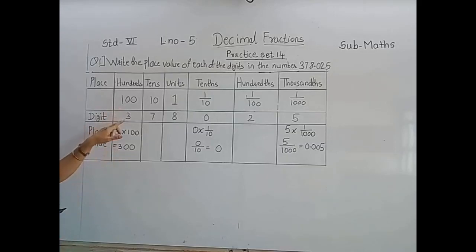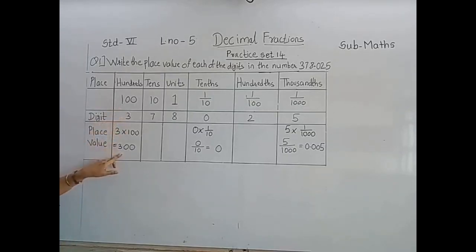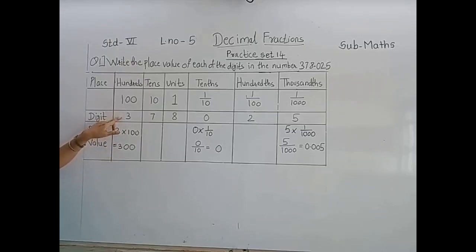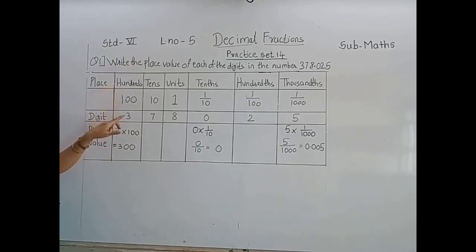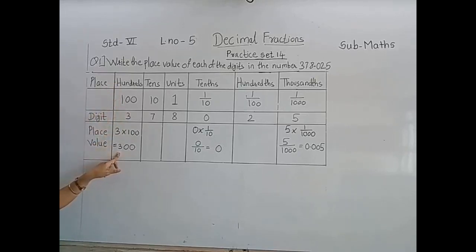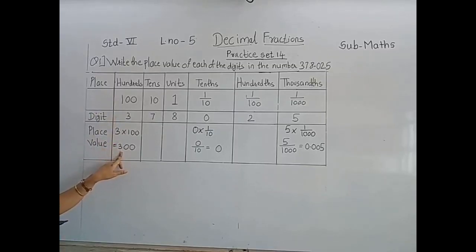First, the place value of 3 is 300. Here the place of 3 is 100. So we have multiplied 3 by 100 and we get 300. So the place value of 3 is 300, as they have given.